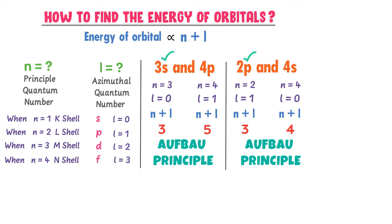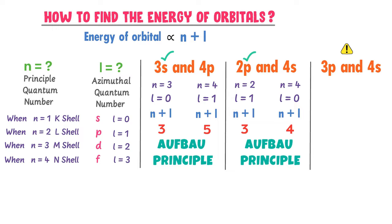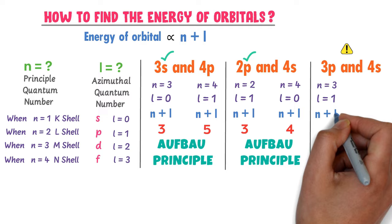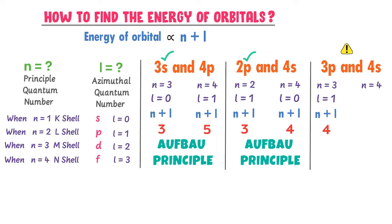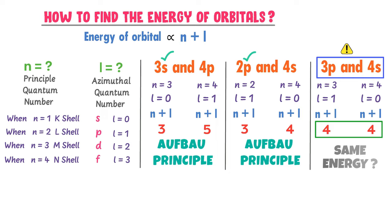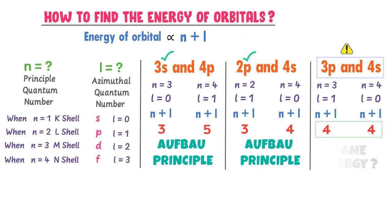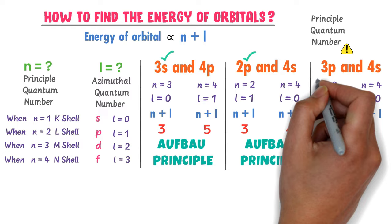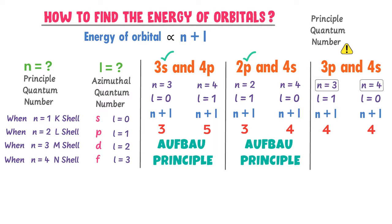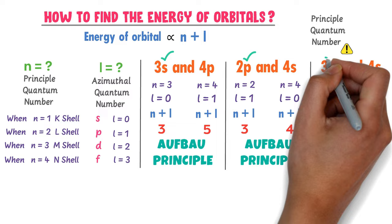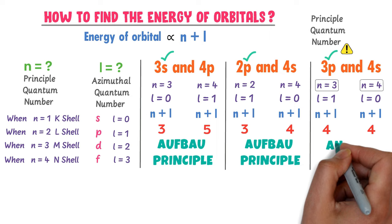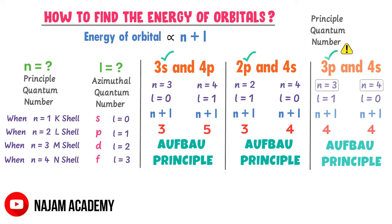You should also know the special case. For example, consider 3p and 4s. In case of 3p, n equals 3 and for p, l equals 1, so n plus l equals 4. In case of 4s, n equals 4 and for s, l equals 0, so n plus l also equals 4. The value of n plus l is the same for both. Do they have the same energy? The answer is no. In such cases, when you get the same n plus l value for two orbitals, always decide based on the principal quantum number n. Since 3p has n equals 3 and 4s has n equals 4, the 3p has lower energy. Therefore, electrons will first fill the 3p orbital and then the 4s orbital.